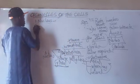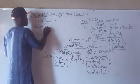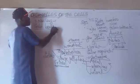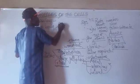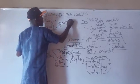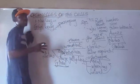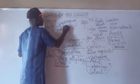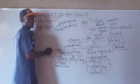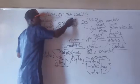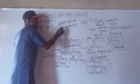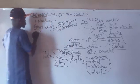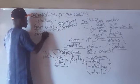The next organelle is the Golgi body. The Golgi body of the cell is responsible for the packaging of food materials. It also brings about the maintenance of the cell. So the Golgi body packages food materials and maintains the cell.